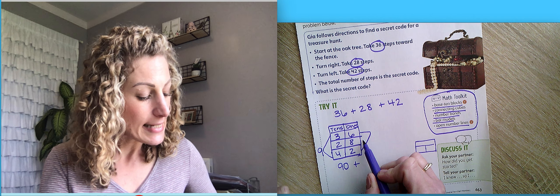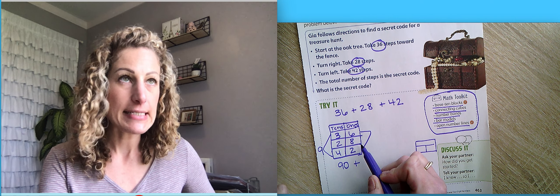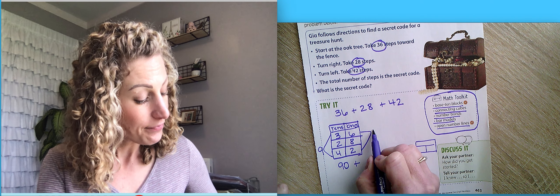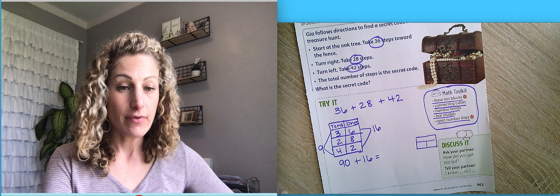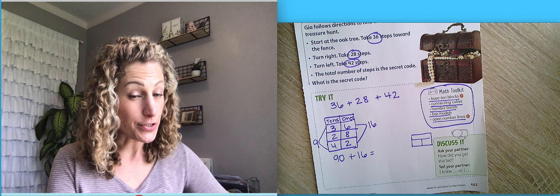6 and 2 is 8. And 8 more. 8 plus 8 is 16. There are 16 ones. That's one way you can do it.